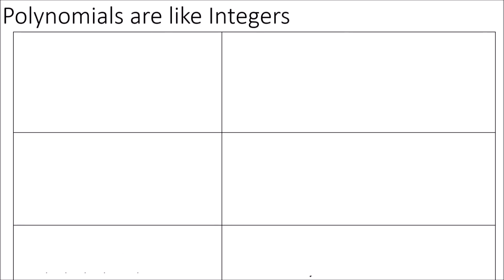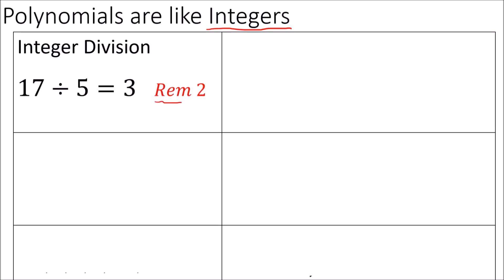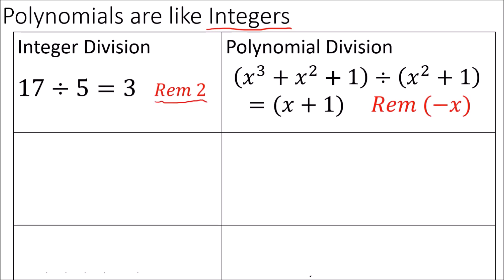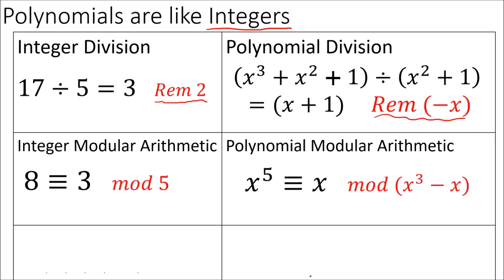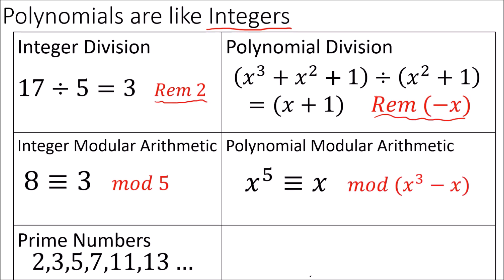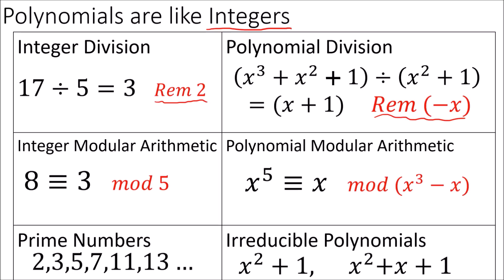Specifically, I'm going to talk about how polynomials are very similar to the integers. Just as when sometimes we divide integers and get a remainder, we can also divide two polynomials and get a polynomial remainder. And just as we can do modular arithmetic with integers, we can also do modular arithmetic with polynomials. And just as there are special integers with no factors called prime numbers, there are special polynomials with no factors called irreducibles. Before I go into detail about polynomials, I'm going to introduce some notation for polynomial sets.